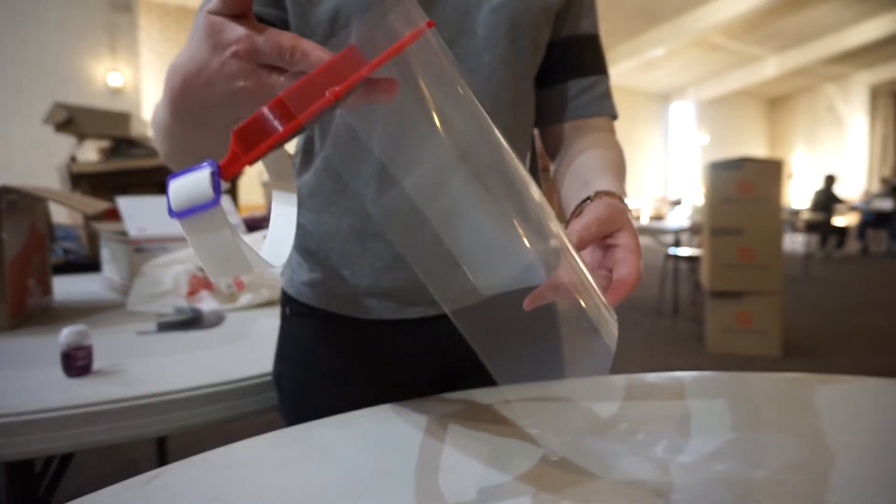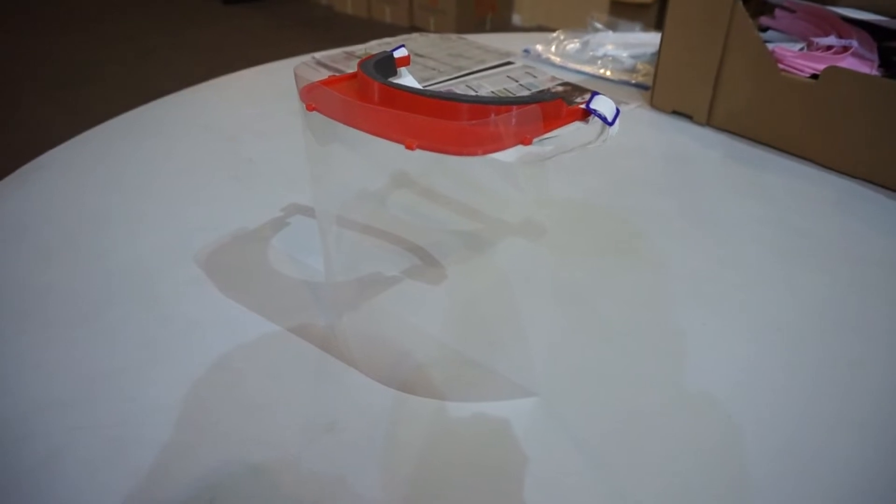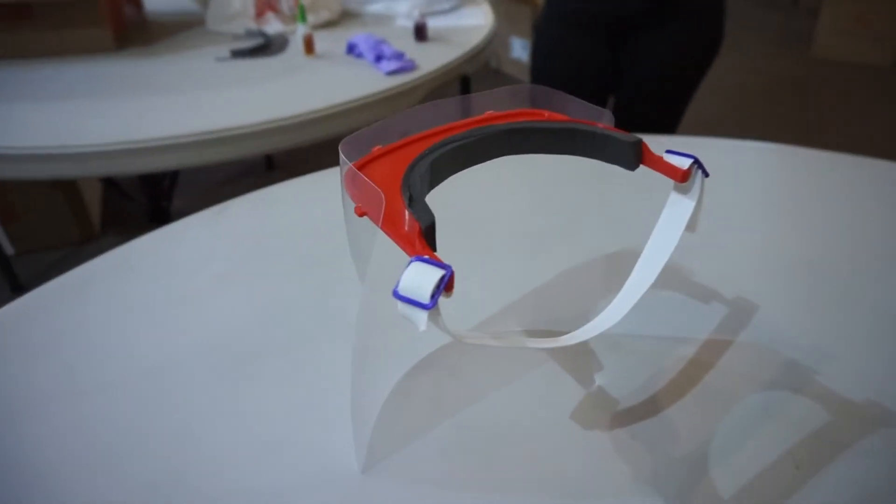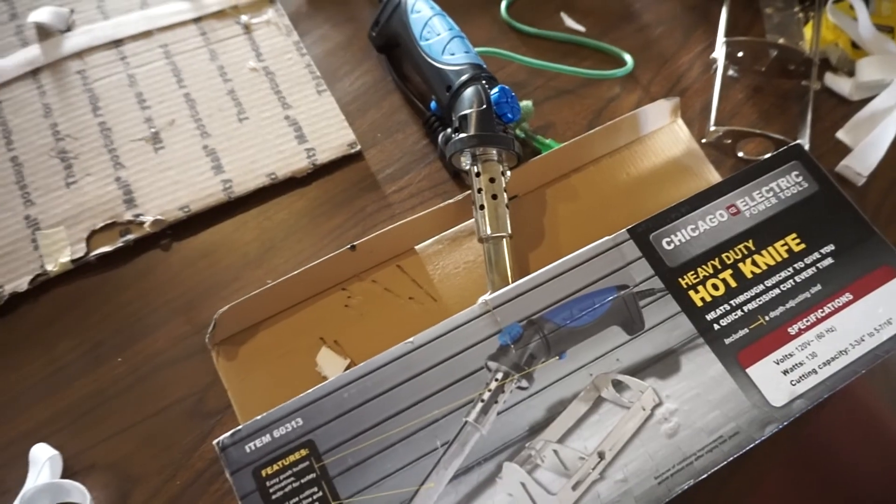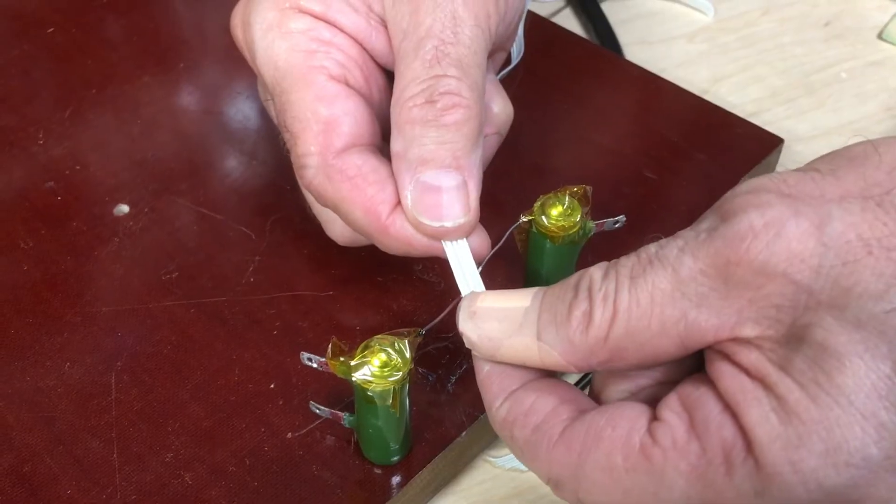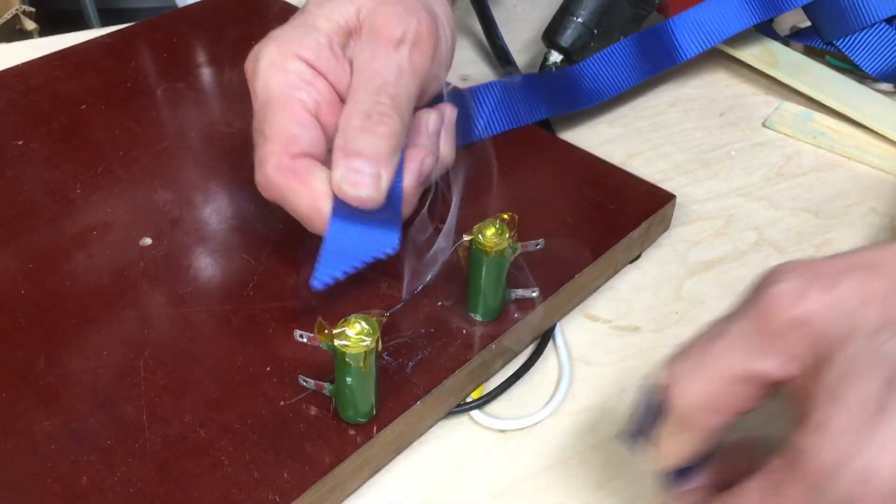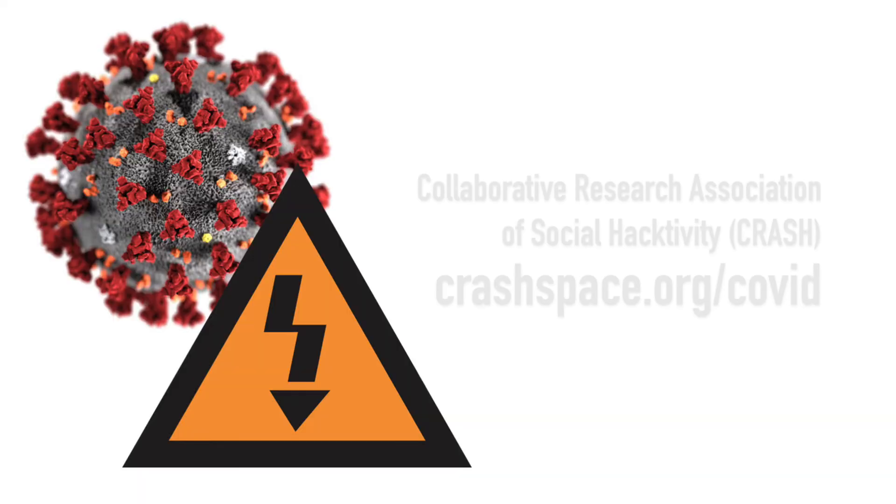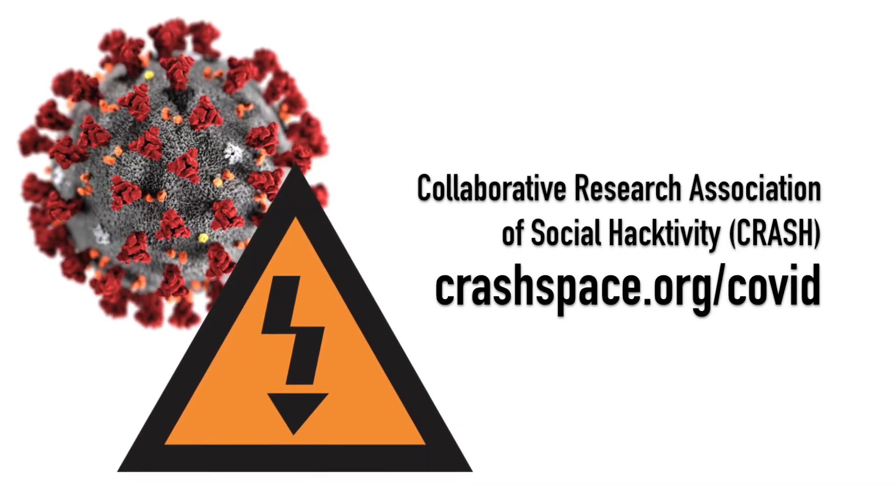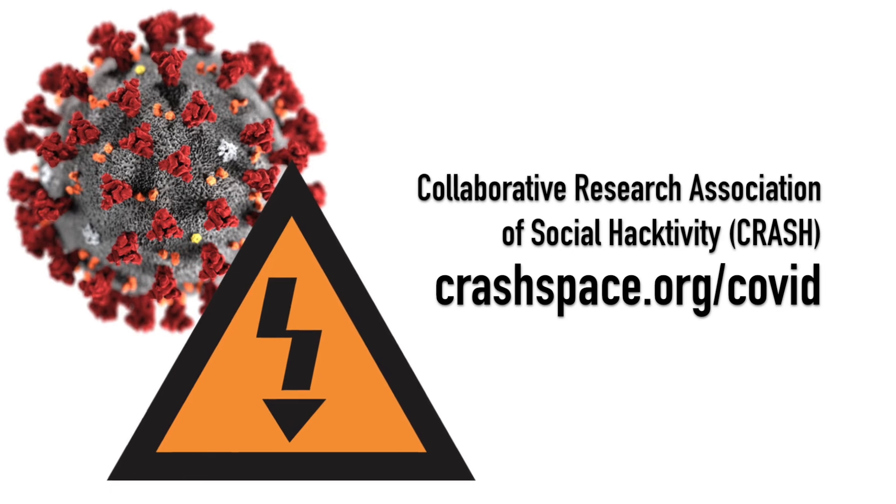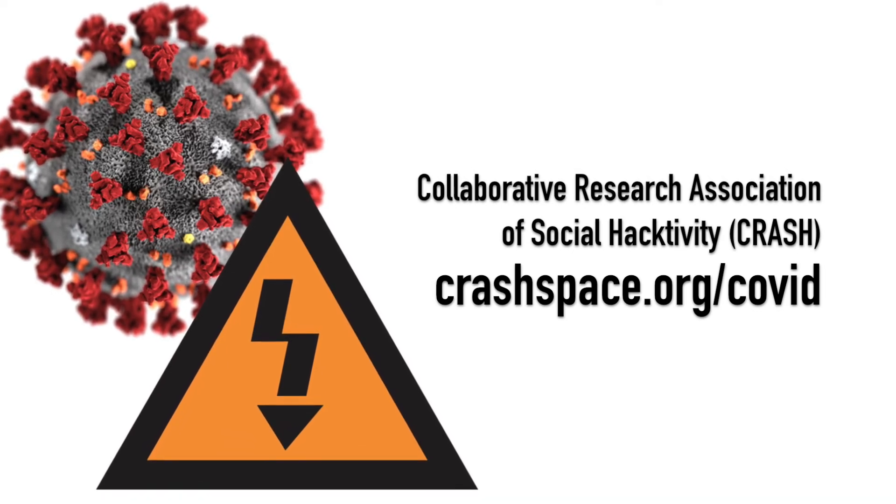Your face shield is complete. Other elastic cutting methods that can make large-scale assembly easier are using a hot knife or hot wire cutter. These will fuse the ends together and keep them from fraying. Remember to visit crashspace.org/COVID for more information on the Crash Space COVID response.